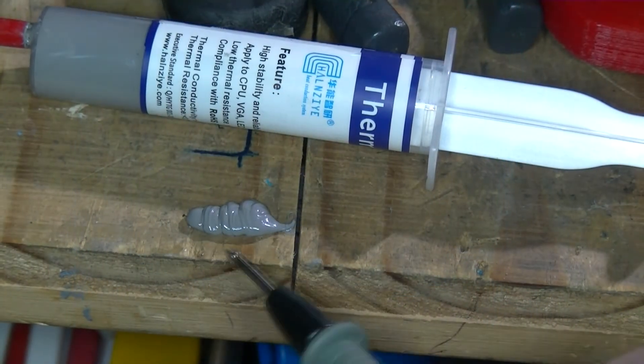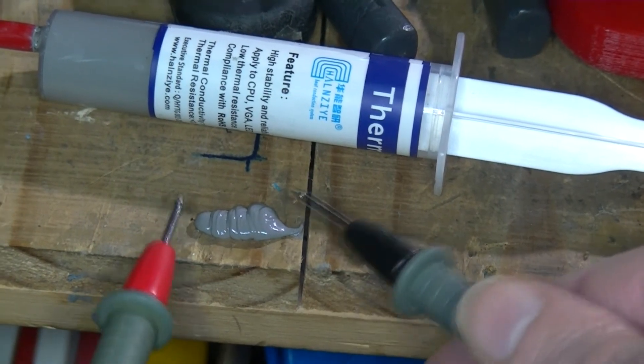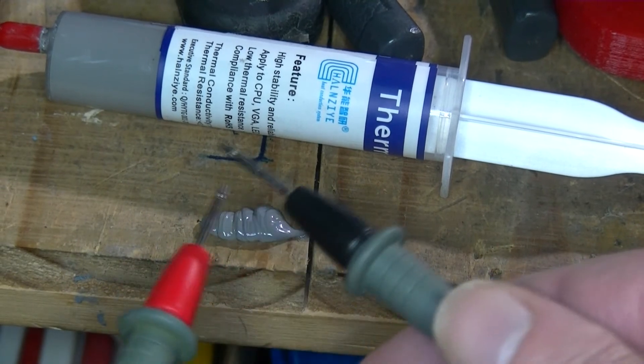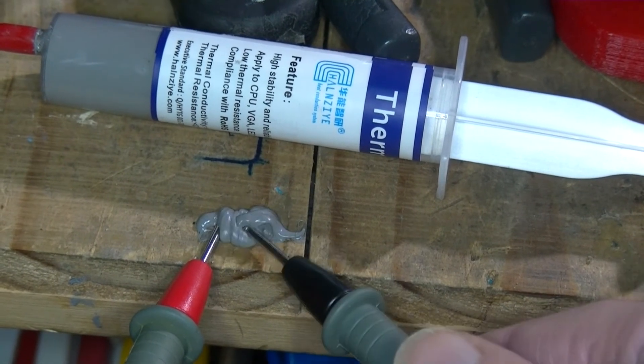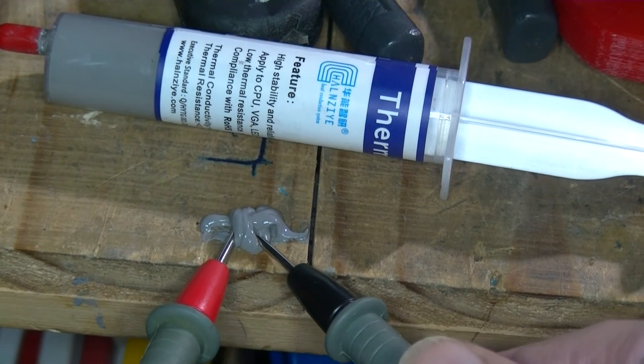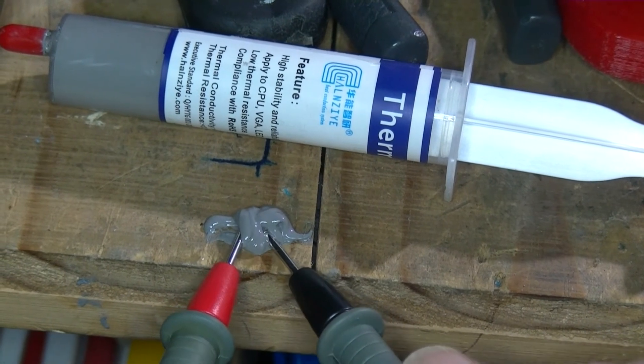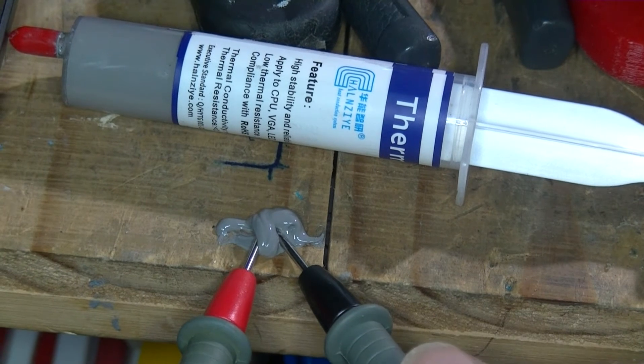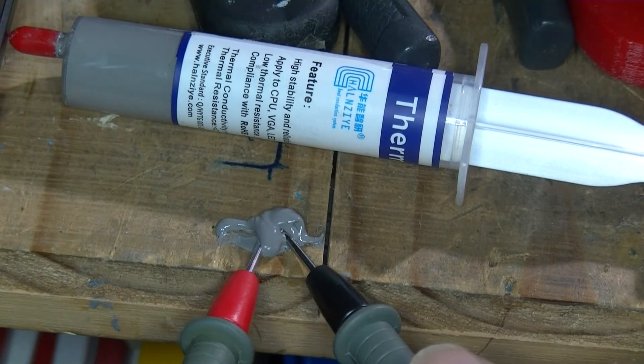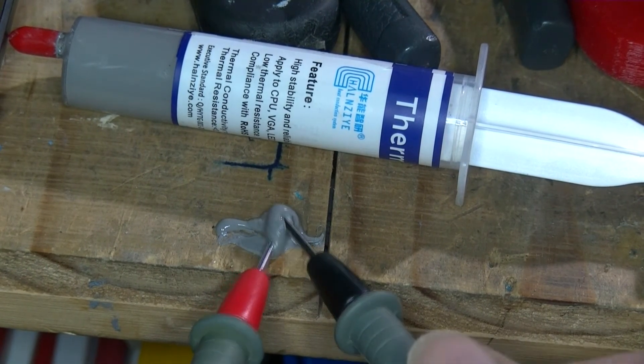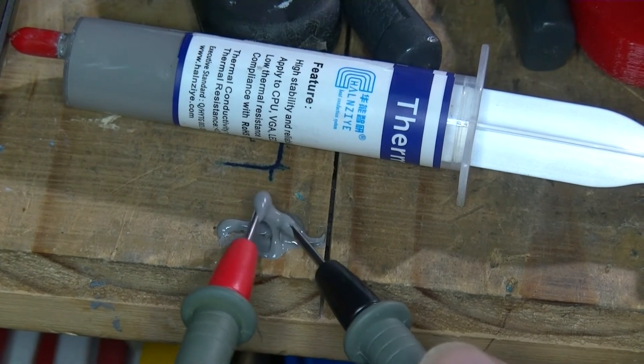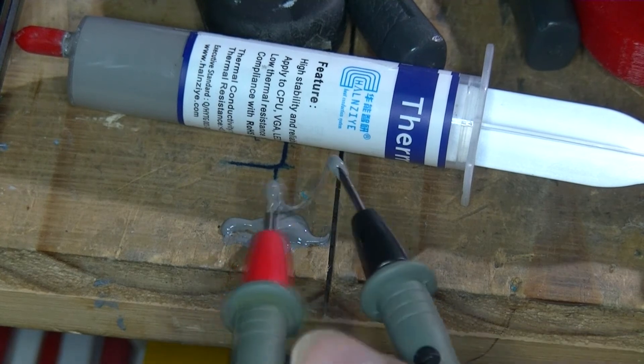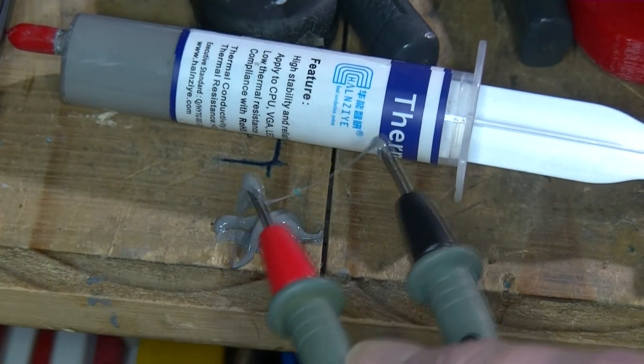Right, I've put some of this heat sink paste down here and I've got this on continuity. Nothing. I might be touching the tips together there. And there. So no. Take my word, it's not showing any ohms there. It's total resistance.